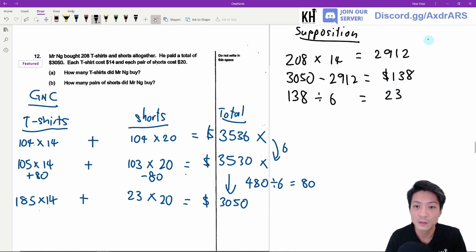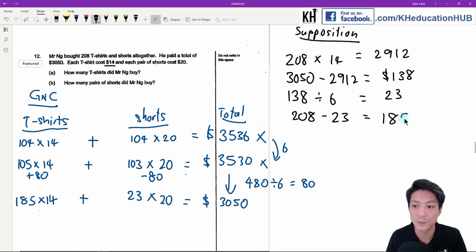23. So if you assume the t-shirt, the final answer that you will get will be the shorts. And usually I'll start off the assumption by assuming the item with the least amount. So once you get 23, basically to find the other item you just use 208 minus 23. It's going to give you 185.